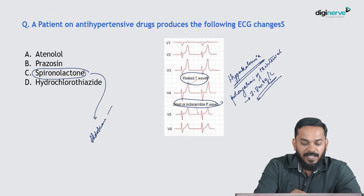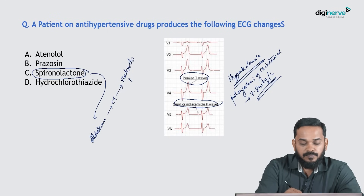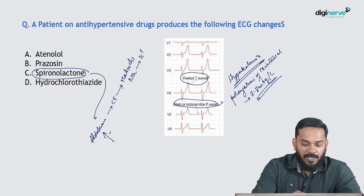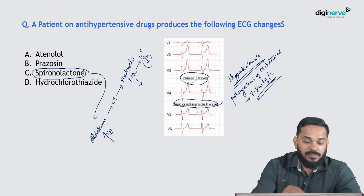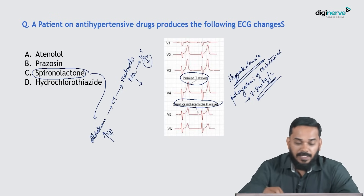Aldosterone acts on the collecting tubule where it reabsorbs sodium in exchange for potassium. So when you are blocking aldosterone, it will reduce the reabsorption of sodium and reduce the excretion of potassium, resulting in hyperkalemia.